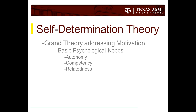As background on self-determination theory, it is a grand theory suggested by Ryan and Deci. It is an attempt to explain human motivation and behavior. The overarching theme is that when people have their basic psychological needs of autonomy, competency, and relatedness met during an activity, they are more likely to thrive in their motivation and continue in the activity.